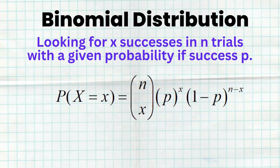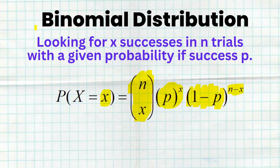Let's first remind you what the binomial distribution is. Here we're looking for x successes in n trials with a given probability of success, p. That's called the binomial distribution because you have to be told two things: n, a given number of trials, and p, the probability of success. Now here is the formula — on the AP stats formula sheet — for calculating the probability of x successes in n trials. This first part tells you how many different combinations you could have x successes out of n trials. This is for the probability of those successes, and then all of your other trials must be failures. So if you have x successes in n trials, then n minus x must be how many failures you have, and 1 minus p is your probability of failure.